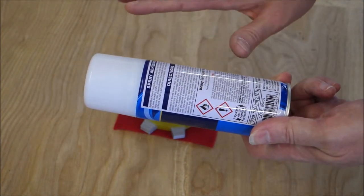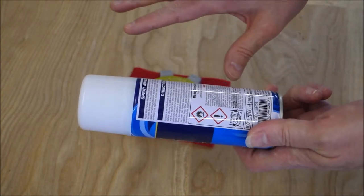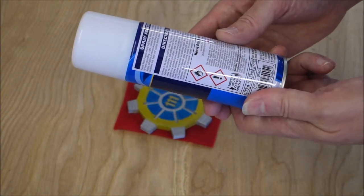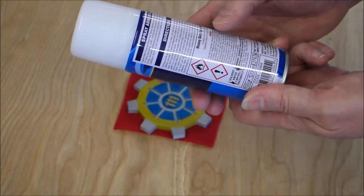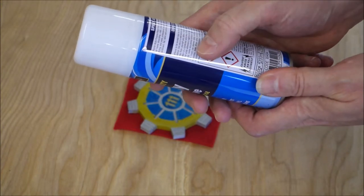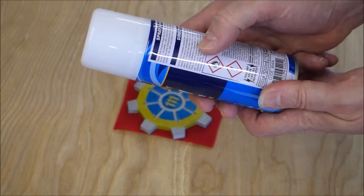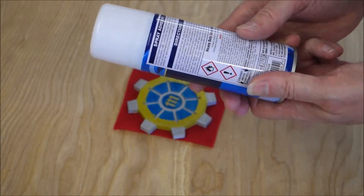You spray it on one side, leave it for a few seconds, let it set slightly, and then you stick it together. Spray with a light uniform coat. Make bond while adhesive is aggressively tacky. There's nothing worse than being aggressively tacky.